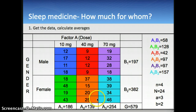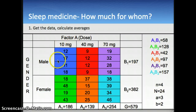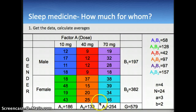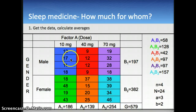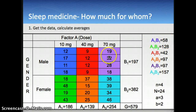Then we have an interaction effect. The interaction involves the blue cell, red cell, purple cell, green cell, orange cell, and bright blue cell — all separate conditions that we compare to each other. For example, the blue cell was 58 minutes, one red cell was 42 minutes, and another cell was 128 minutes.